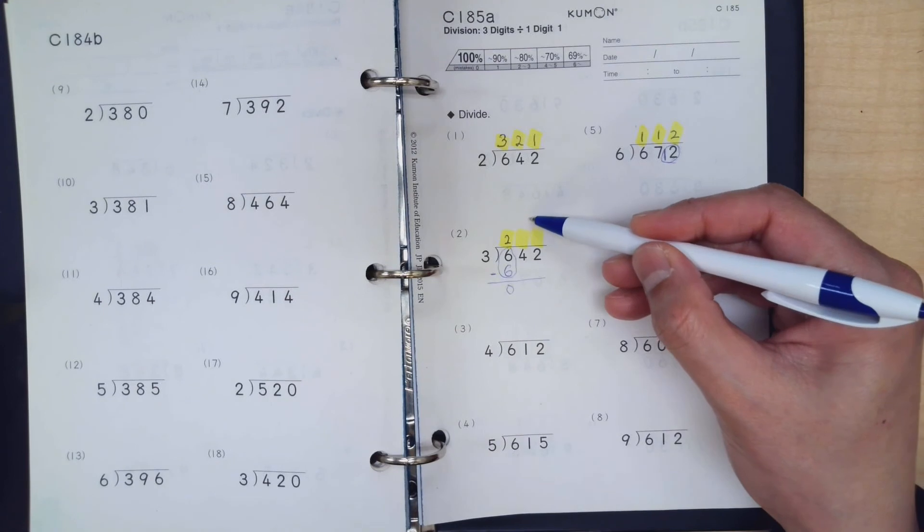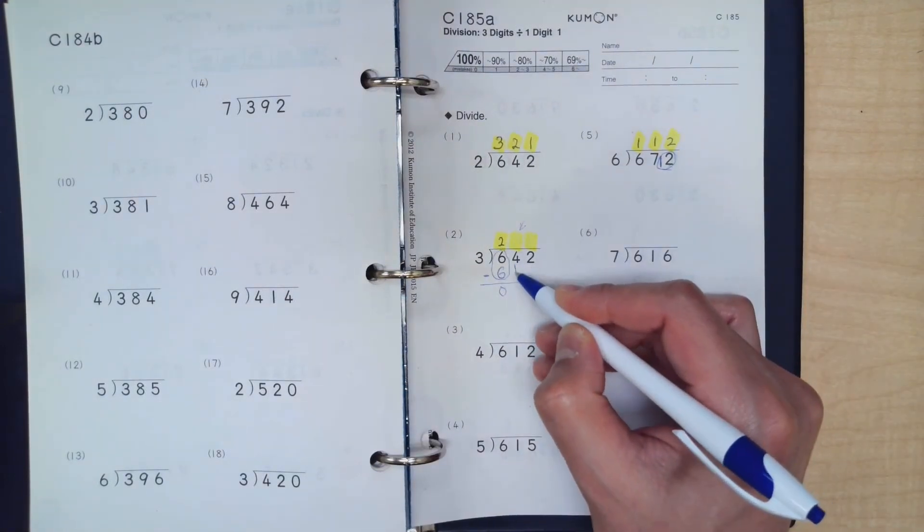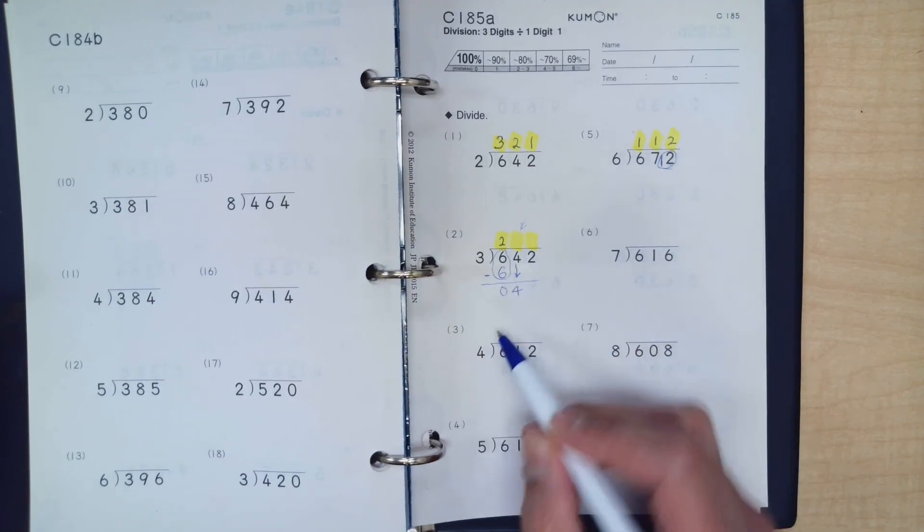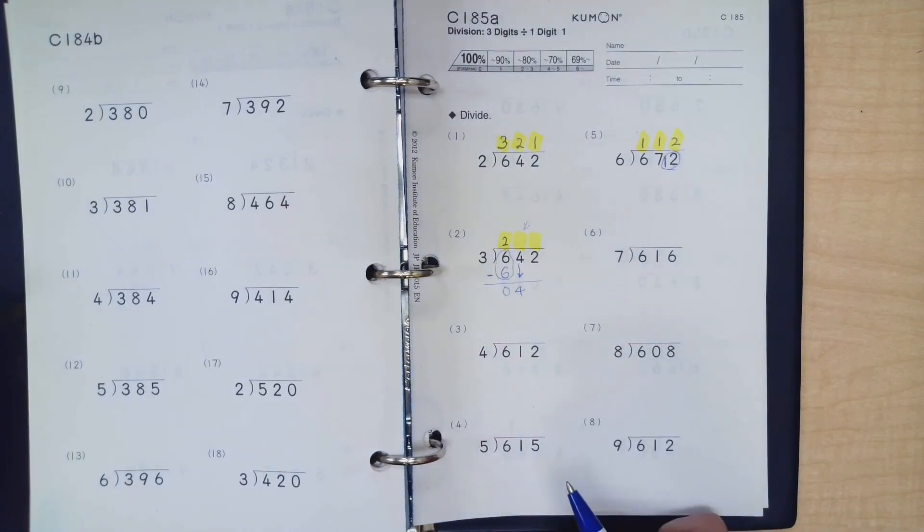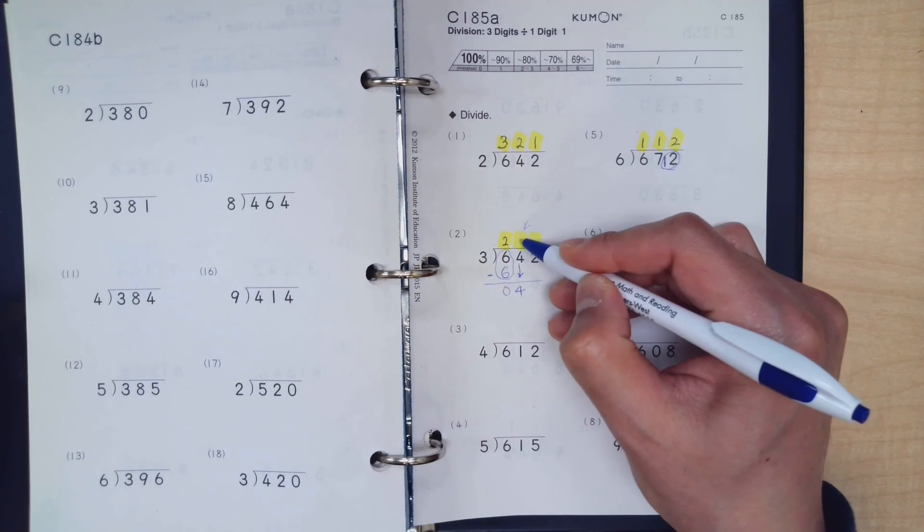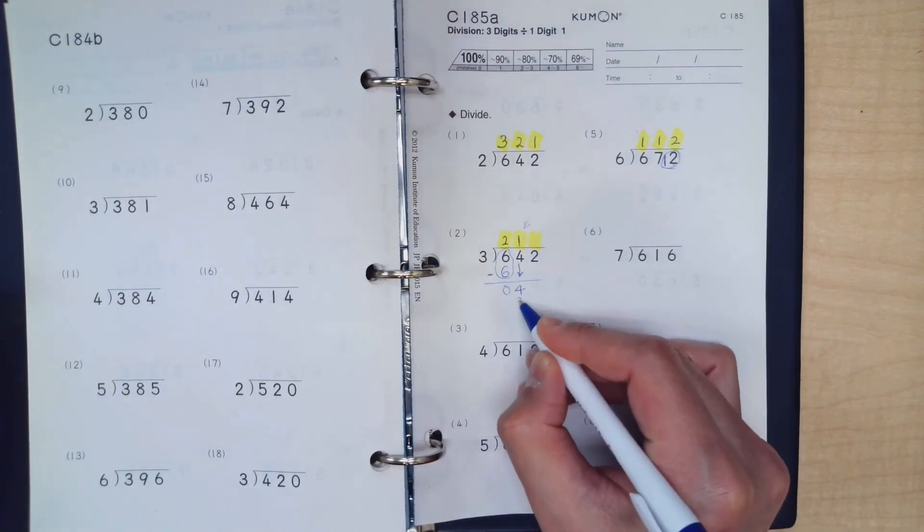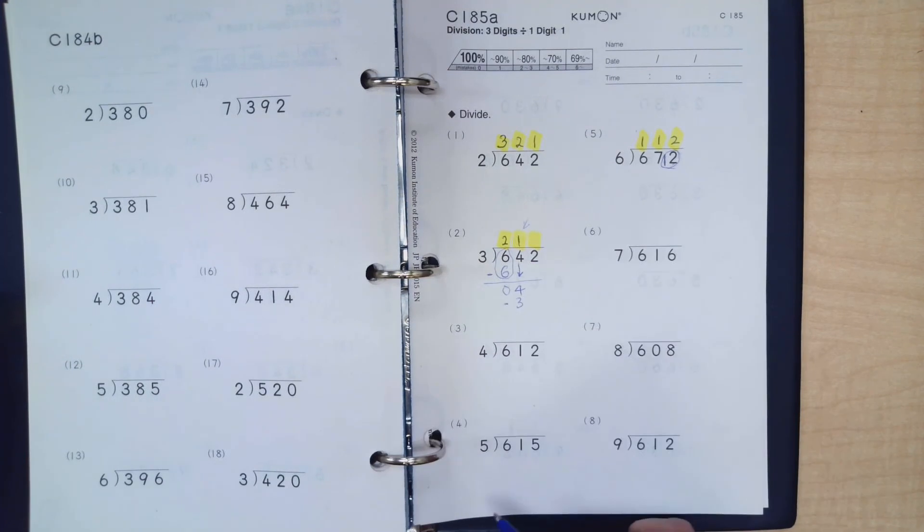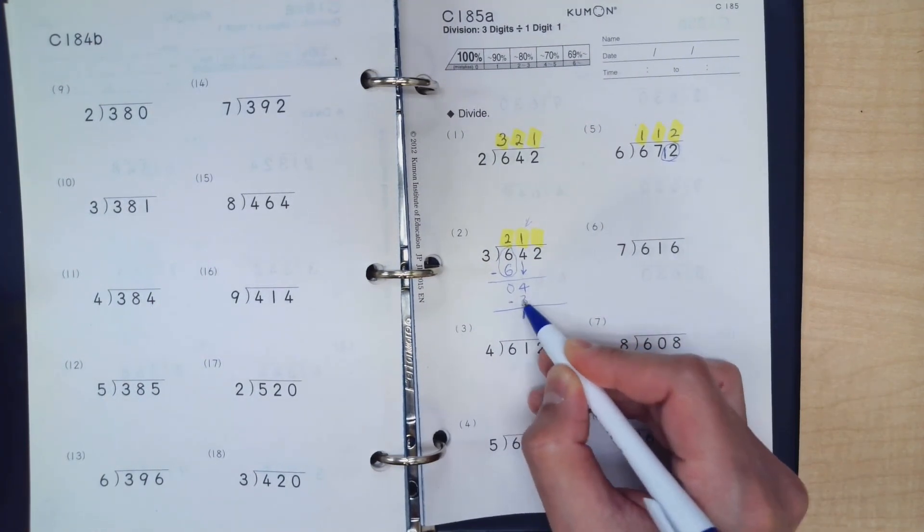And when you move on to the next answer spot, you bring down the division number, which is four. Then you say to yourself, what is four divided by three? It's one, remainder one. So this is how you do it. Three times one. Three times one is three. Then you will do another subtraction there. Then you will have one, because four minus three is one.